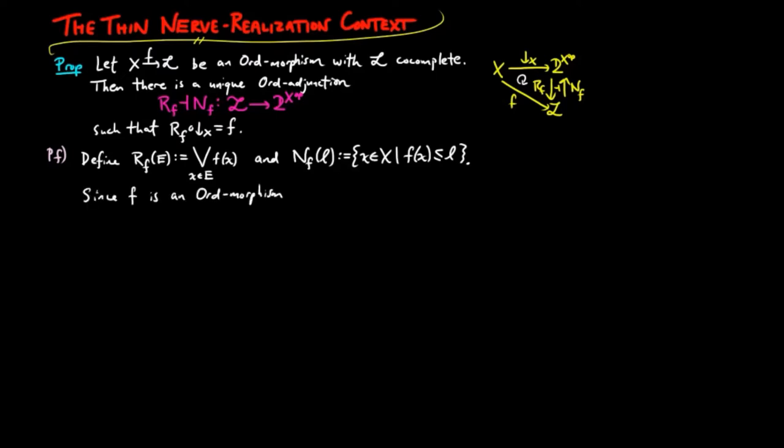Since f is an order morphism, Nf on l is down-directed. Therefore Nf is well defined. Also if E is less than or equal to E prime as down-directed sets, then Rf on E which is equal to the supremum of f(x) as x ranges over E is less than or equal to the supremum on f(x') where x' is in E'.